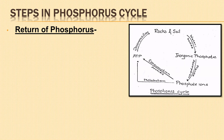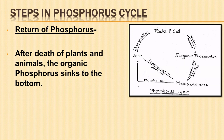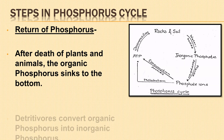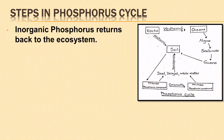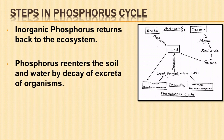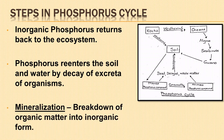The third and final step in the phosphorus cycle is the return of phosphorus to the ecosystem. After the death of plants and animals, the organic phosphorus sinks to the bottom where detritivores convert it back to inorganic phosphorus, which then goes back into the ecosystem. Phosphorus is also returned to the soil and water through decay of excreta of organisms. The breakdown of organic matter into inorganic forms by bacteria is known as mineralization.